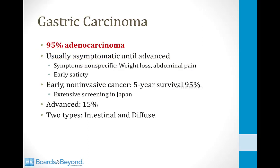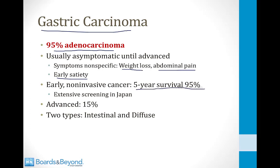Gastric carcinoma or stomach cancer is 95% adenocarcinoma. It's a very bad cancer, usually asymptomatic until advanced, with nonspecific symptoms like weight loss, abdominal pain, and early satiety. If identified early and non-invasive, the five-year survival is excellent at about 95%. Unfortunately, when symptoms develop, patients often have advanced cancer, and the five-year survival drops to 15%. There are two types: the intestinal type and the diffuse type.